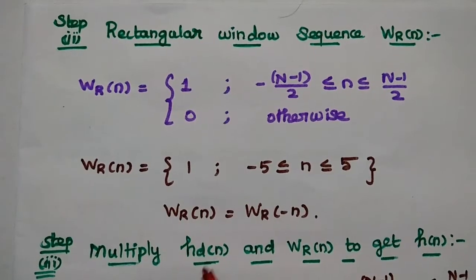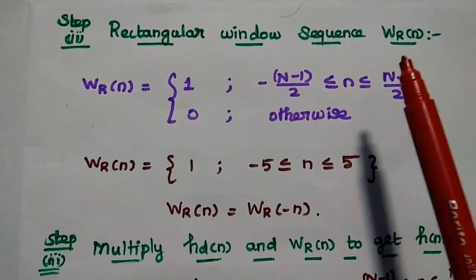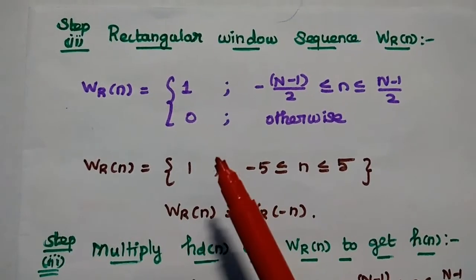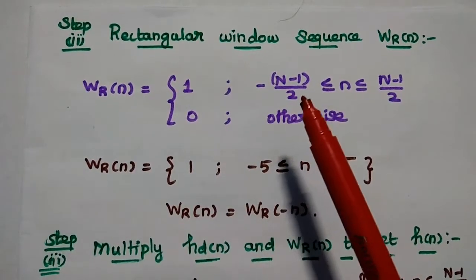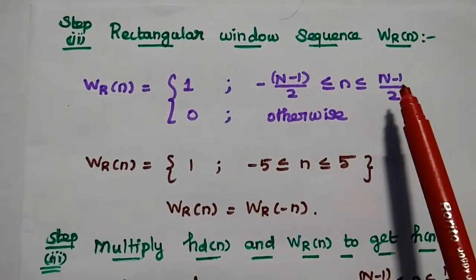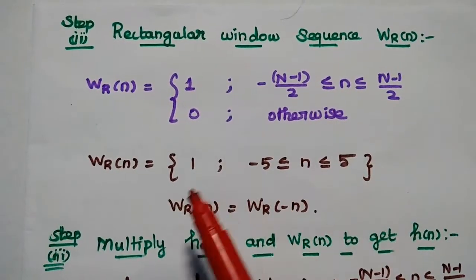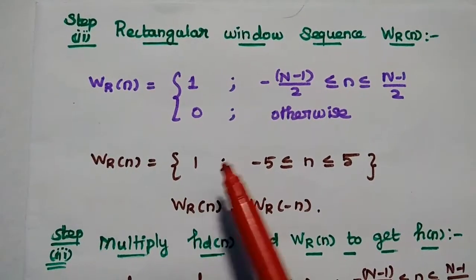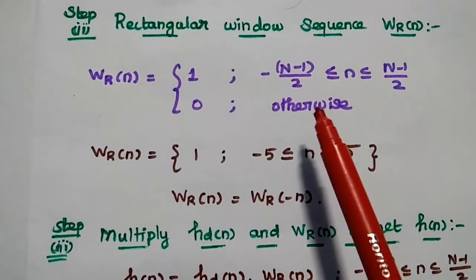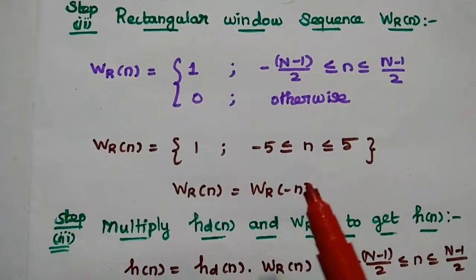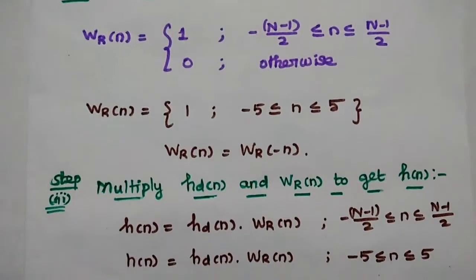The next step is to obtain the rectangular window sequence wr(n). Its value is always 1 from minus (N minus 1)/2 to plus (N minus 1)/2, and 0 otherwise. Here wr(n) equals 1 from minus 5 to plus 5, since N equals 11, and wr(n) equals wr(minus n).